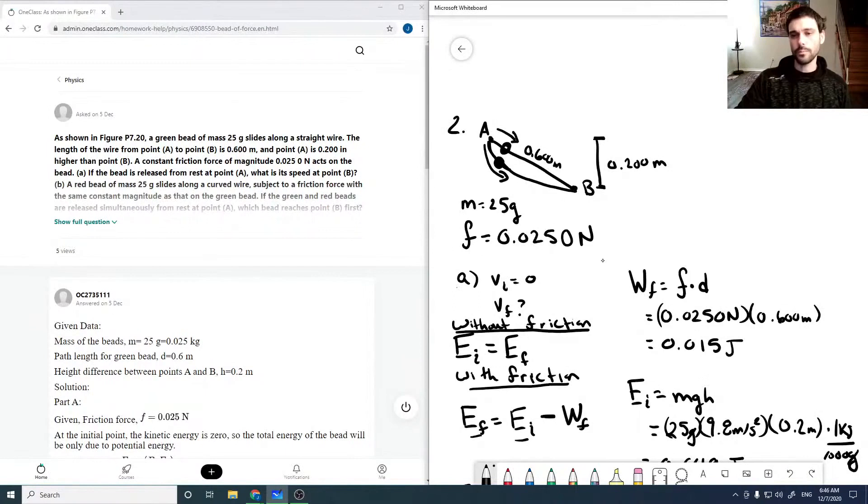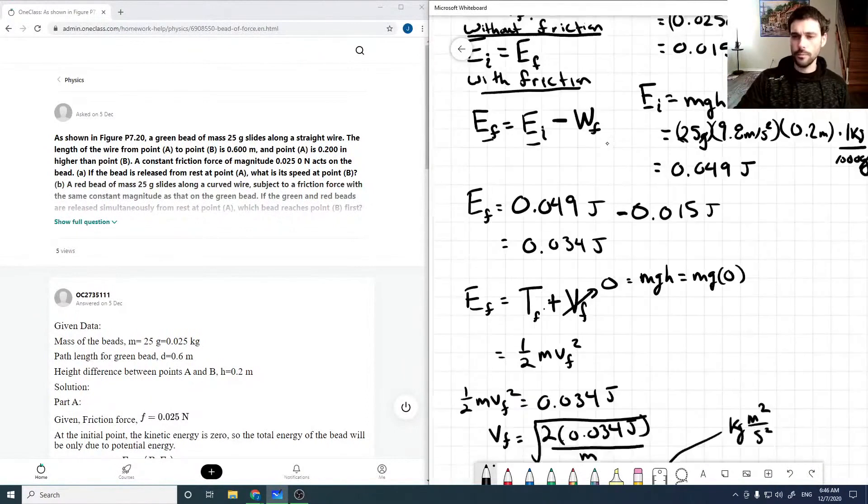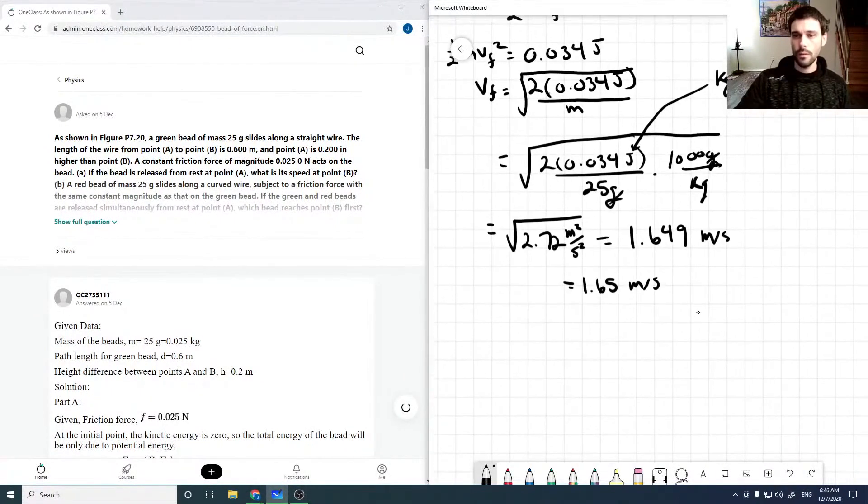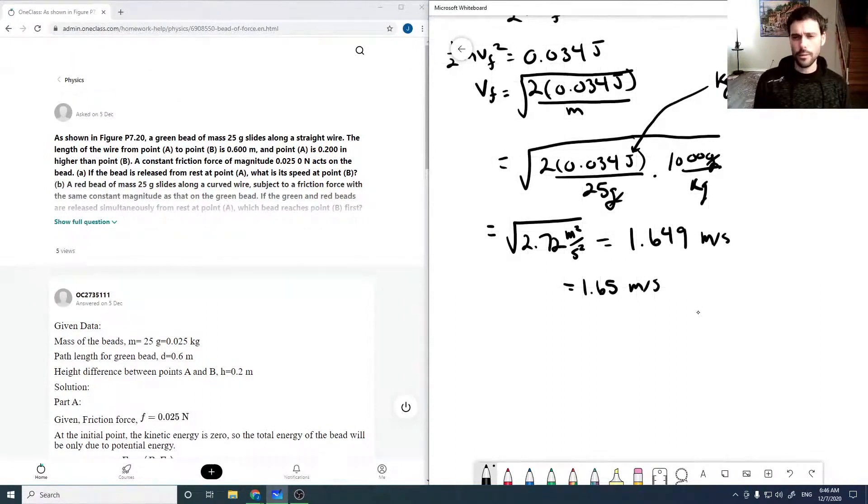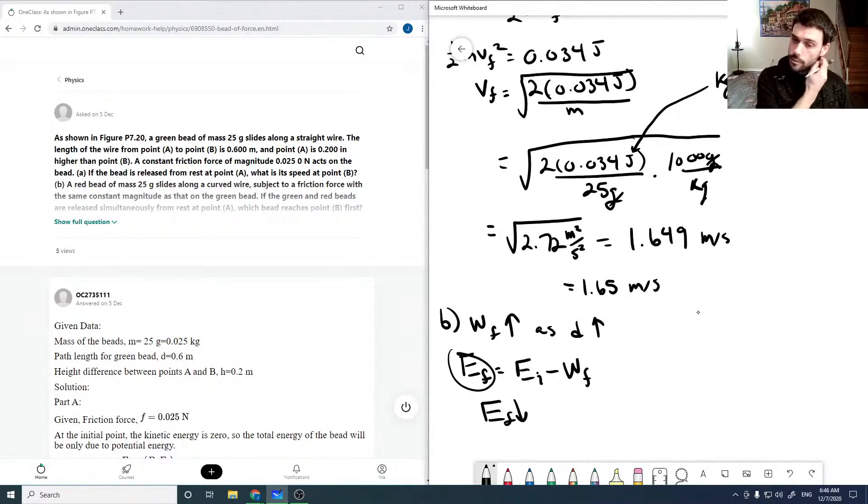But with friction, we now have a longer path. And so without being given the exact path length, our work due to friction will increase. As our D increases, which means that our EF, which equals EI, minus our work due to friction. So our EF is going to decrease. So our final velocity will be less.